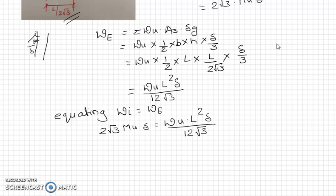If you simplify this and get ultimate moment on one side, which we are supposed to find out—if you keep mu on one side, then you will get this answer as wu L square upon 72, as delta and delta will get cancelled. 12 into 2 is 24, root 3 into root 3 is 3, so 24 into 3 gives 72. So mu equals wu L square upon 72.